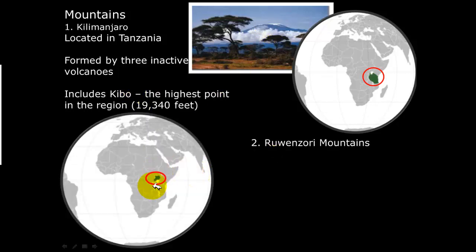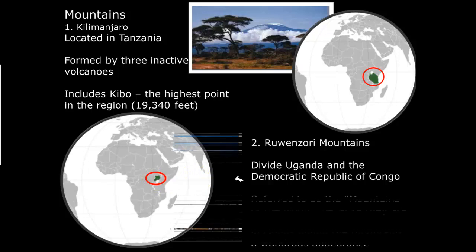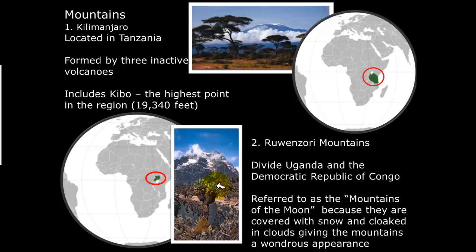The second mountain range we'll be studying are the Rwenzori Mountains, shown here on the map. They divide Uganda and the Democratic Republic of the Congo, and are referred to as the Mountains of the Moon because they are covered with snow and cloaked in clouds, giving them a moon-like appearance. As you can see in this picture, they almost have a moon crescent-shaped appearance.